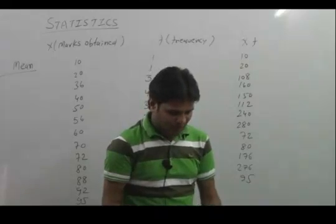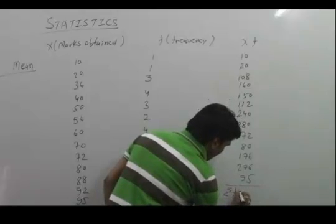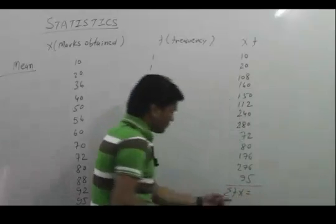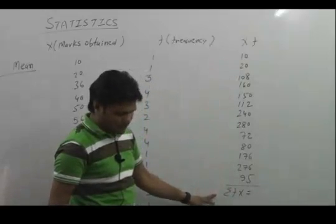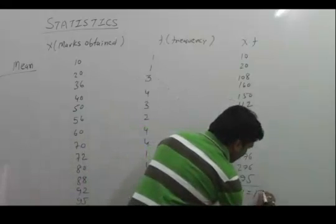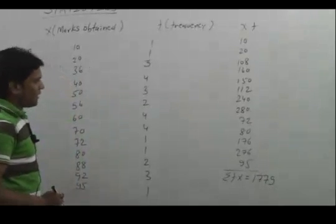Now we need to find out the summation of Fx, that is Sigma Fx. This is known as summation of Fx. If we add them together, that comes to 1779.